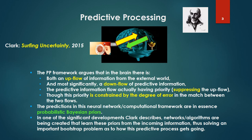In one of the significant developments Clark describes, networks and algorithms are being created that learn these priors from the incoming information, thus solving an important bootstrap problem as to how the predictive process actually gets going. So what's being said there is somehow I have to form a hypothesis that I'm seeing a coffee cup being stirred. Initially, I have to have some ability to perform that prior about the probability of perceiving a coffee cup being stirred. And so, I've got a bootstrap problem as to how I get going. How do I lift myself up on my bootstraps? So, the significance here, as Clark is describing in his book, is that there is progress being made on actually learning these priors.